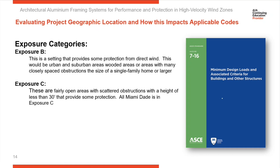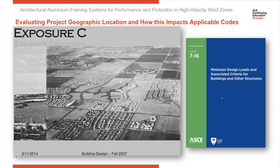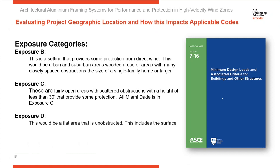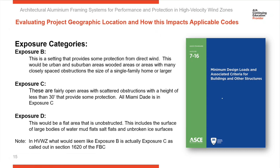Exposure C is an area that's more open than Exposure B — a fairly open area with scattered obstructions having a height of less than 30 feet. This area is smaller, still providing some protection, but not as much as the urban area of Exposure B.